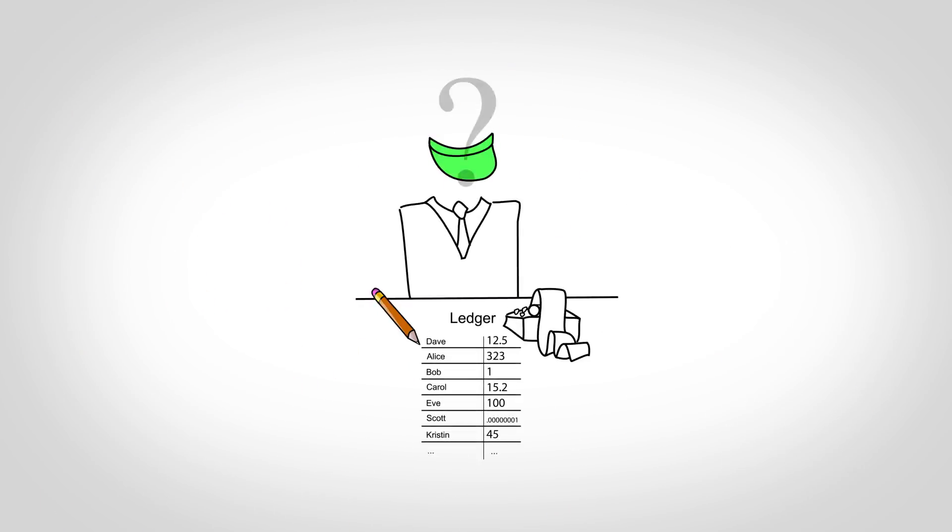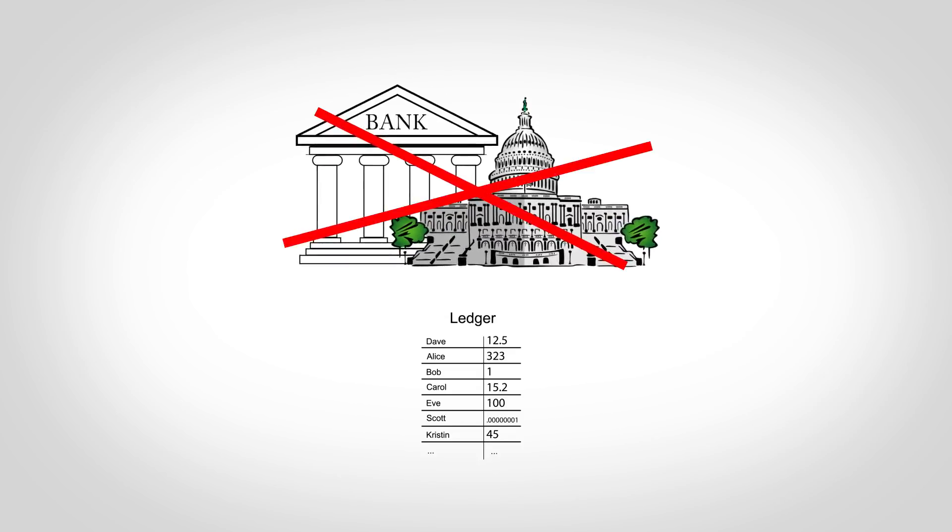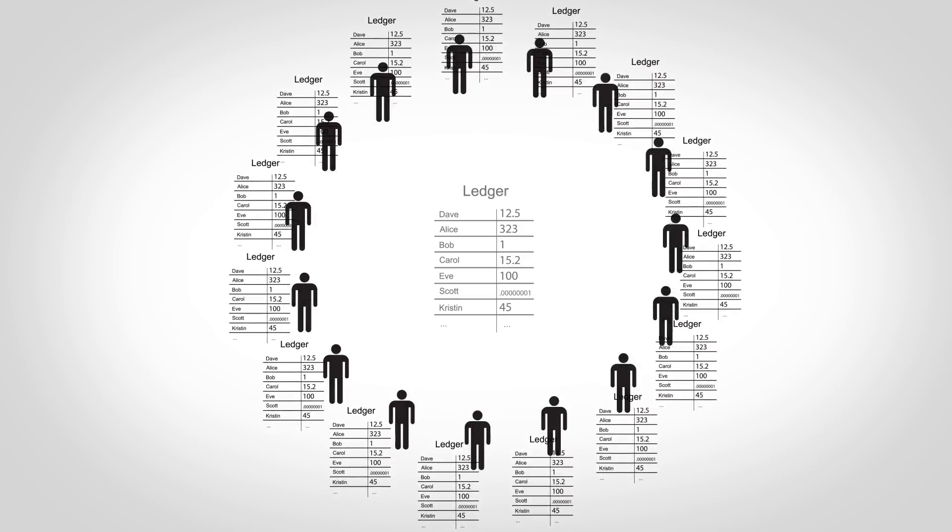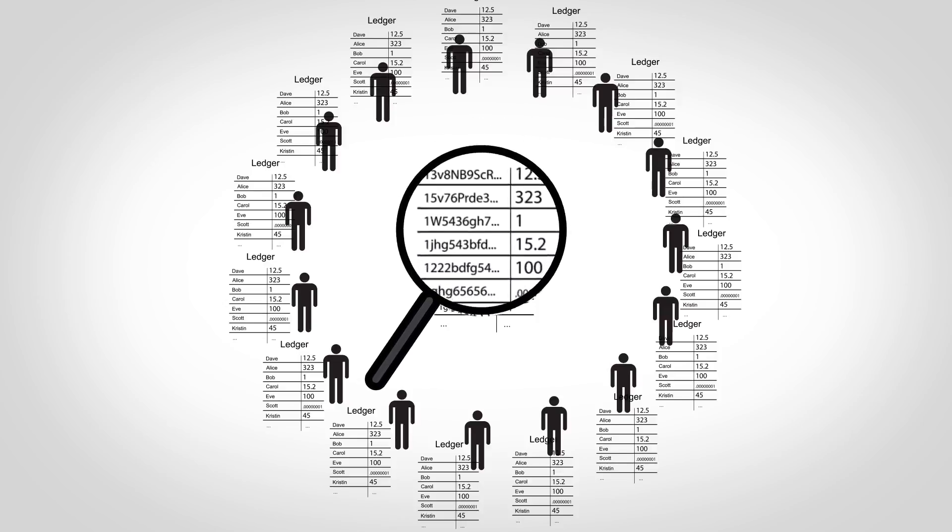So who maintains this ledger and makes sure no one cheats? One goal of Bitcoin is to avoid any centralized control, so every participant maintains their own copy of the ledger. One surprising consequence of this is that everyone can see everyone else's balances, although the real system only uses account numbers and not names, so there's some level of anonymity.